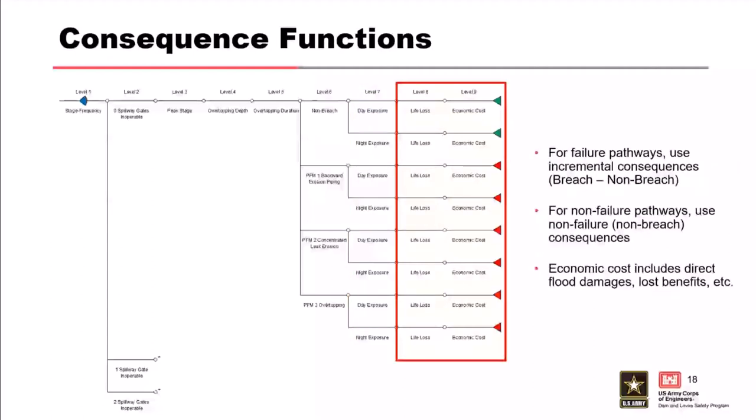Finally, the end of the project event tree contains consequence functions that represent economic or life loss consequences for various types of initiating events, potential failure modes, exposure conditions, or other preceding event combinations. To get the consequences associated with dam or levee failure, you'll need to use incremental consequences, which are the total breach consequences minus the non-breach consequences.